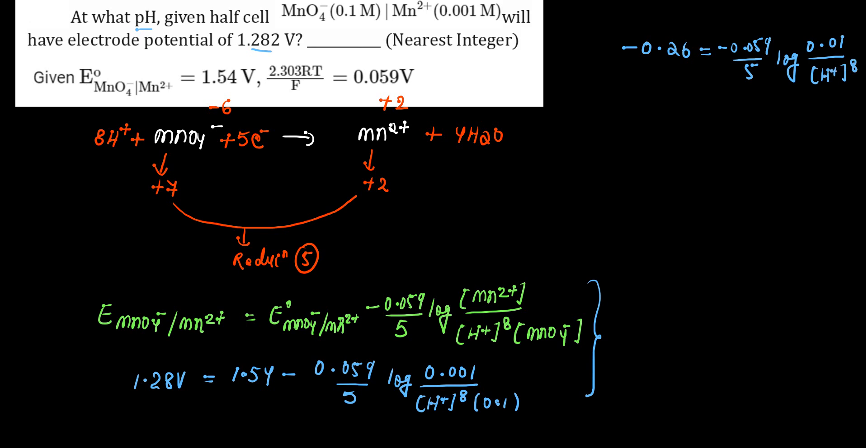Negative sign ko yahan peh hata sakta hai. So log 0.01 minus log H plus to the power 8 is equal to 5 times of 0.26 divided by 0.059. Log 0.01 ko solve karte to vo hota minus 2. Minus 2 right side mein ja kar ke plus 2 ho jayega.